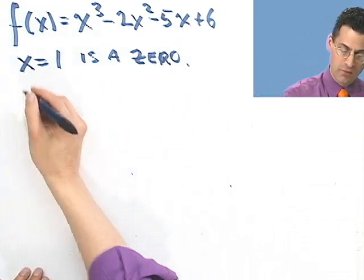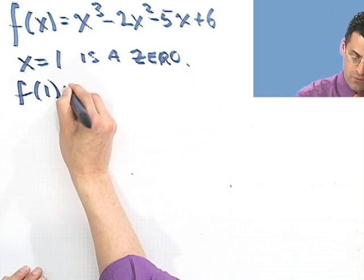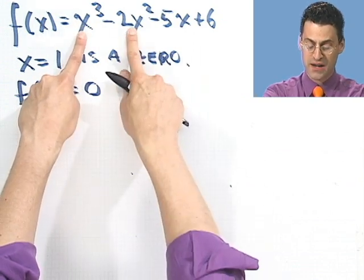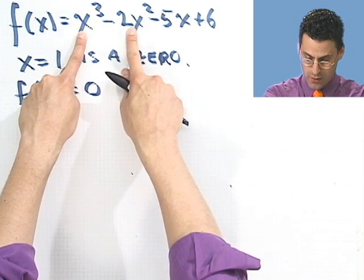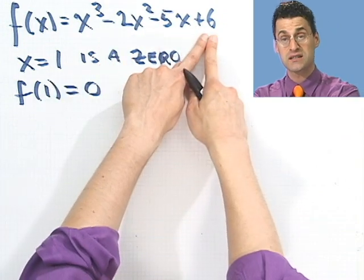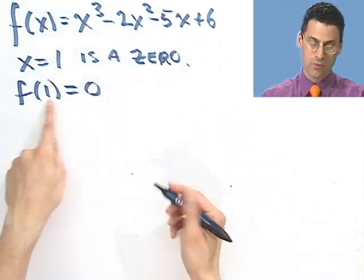So what do I do? Well, if that's a zero, that means that f evaluated at 1 equals 0. And you can check. By putting a 1 here, I see 1 minus 2 is negative 1. Negative 1 and minus 5 is negative 6, plus 6 is 0. It checks. This really is a root.